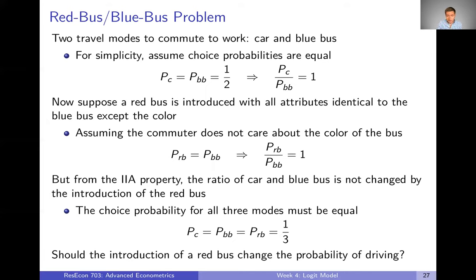To summarize: we started with car and blue bus each at 50%. We added a red bus. Now the choice probability of driving is only a third, the blue bus is a third, and the red bus is a third. Why has adding a red bus that is otherwise identical to the blue bus changed people's choices about driving? It shouldn't have — there's no reason that changed whether you want to drive just because now half the buses are red instead of blue. But the logit model says that it will.